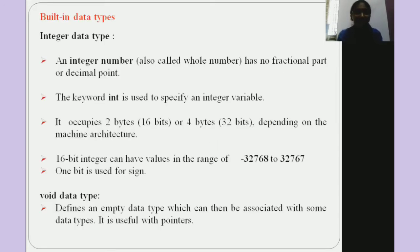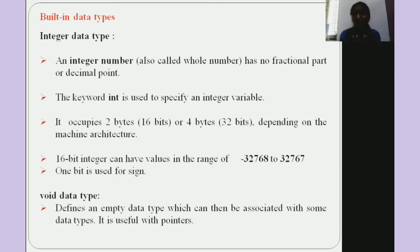First, the integer data type. Integer means it will take only integer values — it will not have any fractional or decimal part. The keyword for integer is 'int'. The memory allocated for int is two bytes or four bytes, depending on the architecture, and the range is minus 32,768 to plus 32,767.